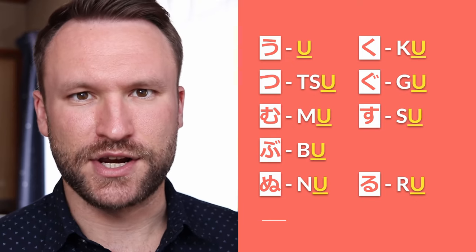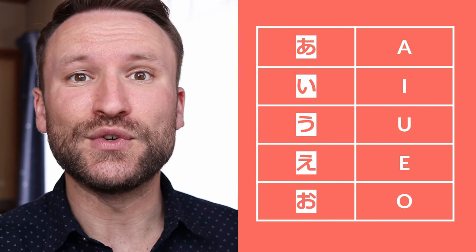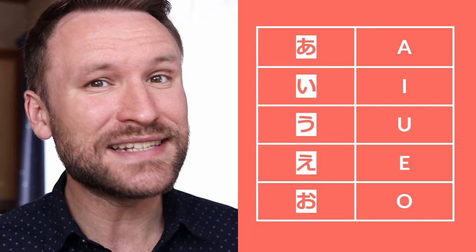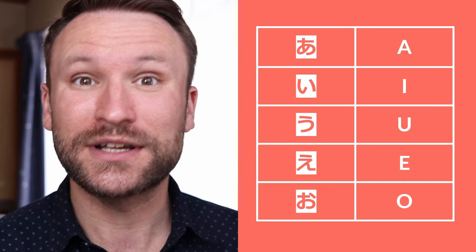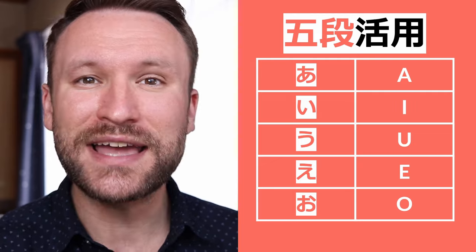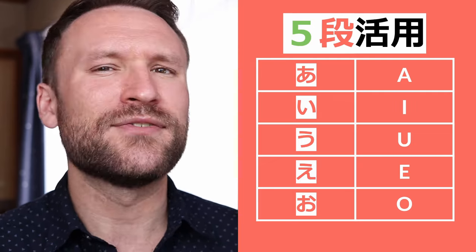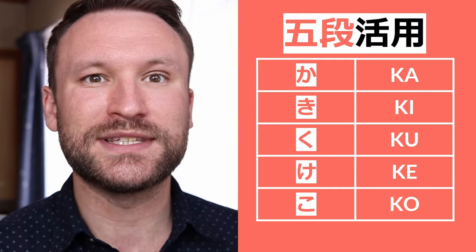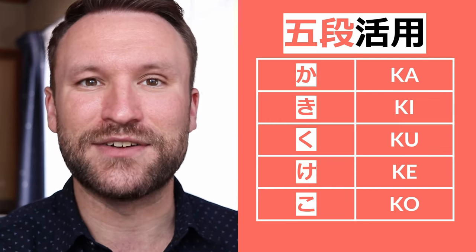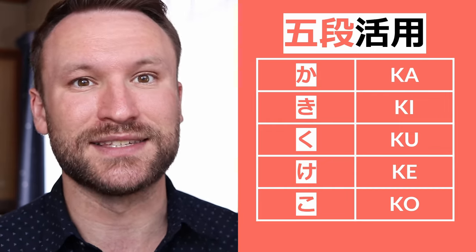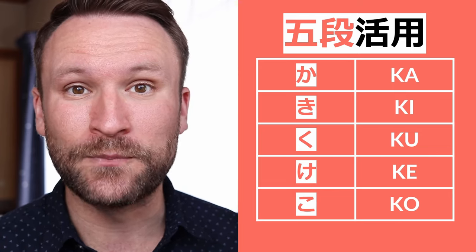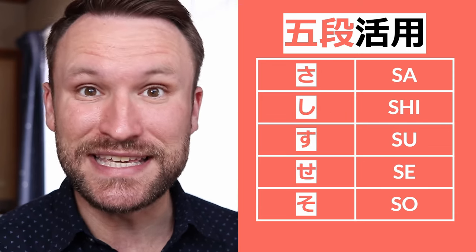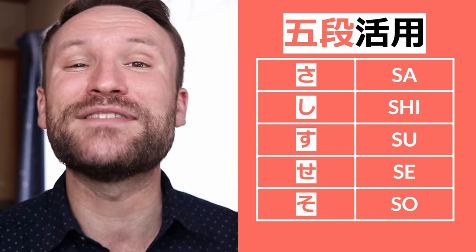Let's go ahead and look at a hiragana chart. First, we have the vowel sounds: a, i, u, e, and o — five different vowel sounds. This is actually where the word godankatsuyo comes from. Godan means five steps, and katsuyo means conjugation. The five steps are these five different vowel sounds. Moving down the hiragana chart, each character is just a consonant sound plus one of these five vowel sounds. For instance, if we take the K consonant sound, we get ka, ki, ku, ke, ko. Same pattern for b and s sounds.